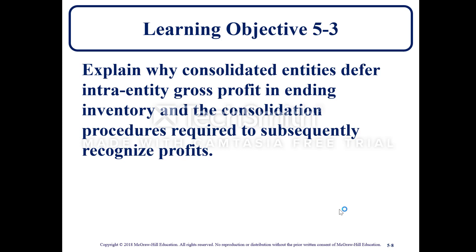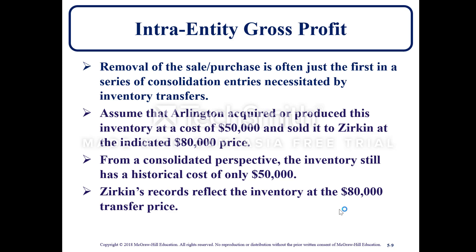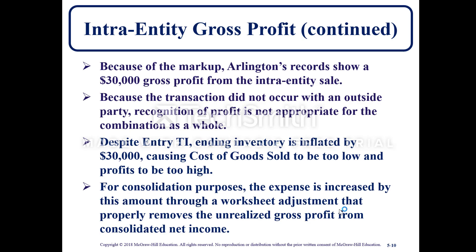Learning Objective 5-3 explains why consolidated entities defer intra-entity gross profit in ending inventory and the consolidated procedures required to subsequently recognize profits. Removal of a sale or purchase is often just the first step in a series of consolidated entries necessitated by the inventory transfer. Assume that Arlington acquired or produced this inventory at a cost of $50,000 and sold it to Zerkin at the indicated $80,000 price. From a consolidated perspective, the inventory still has a historical cost of $50,000, but Zerkin's records reflect the inventory at the $80,000 transfer price. Because of the markup, Arlington's records show a $30,000 gross profit from the intra-entity sale.